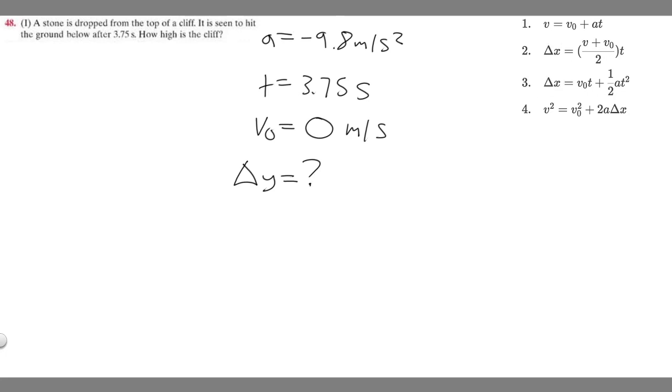We're trying to find delta y. Which equation do we want to use? Well, we're given a, given t, and v sub zero, and we're trying to find delta y. If you look at these equations, this one's going to line up. We have all the variables, so we're going to use this equation and plug everything in to solve for delta y.